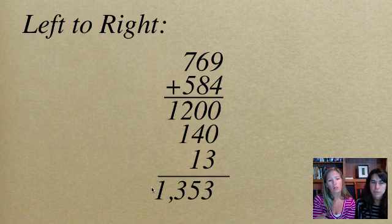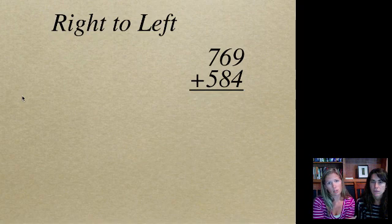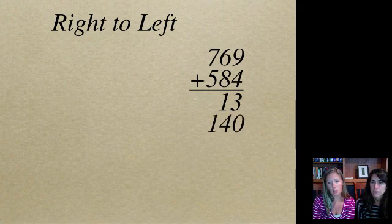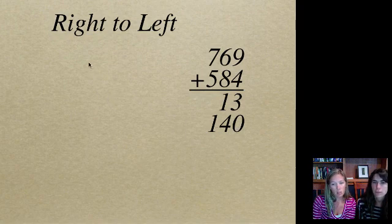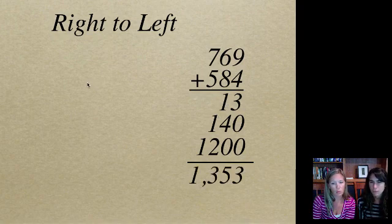So this is the subtotal method from left to right. Now, the subtotal method from right to left is basically the exact same thing, only you're going from right to left. So you start with the ones, 9 plus 4 is 13. Then you go into the tens, 6 plus 8 is 14 tens. Again, just really notice that I'm saying it that way, 14 tens. It's not just 14, it's 14 tens. I'm in the tens column. So I've got to make sure that I write that right over here or you're going to get the wrong answer. And then add up my hundreds. So 7 plus 5 is 12. I have 12 hundreds. So I add in my zeros here. And then again, you just add them up.